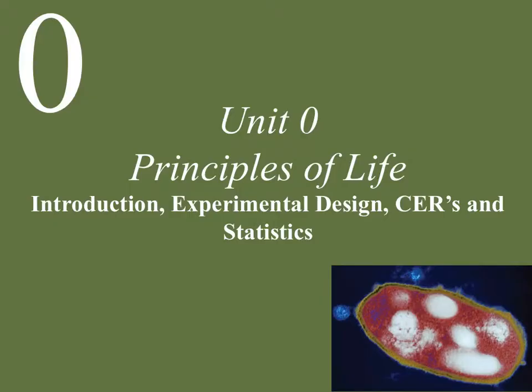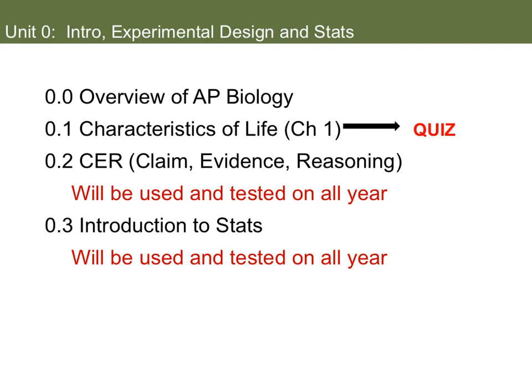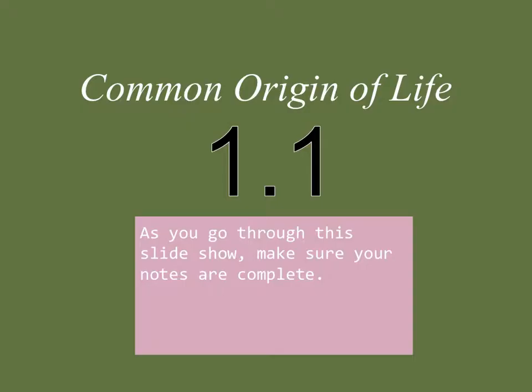We're going to start off with Unit 0: the Principles of Life, Introduction, Experimental Design, CER, and then our statistics. In Unit 0, there are four parts: an overview of AP Bio, Properties of Life — which we will have a quiz on — you need to know what a CER is, which we'll be using and testing on all year long, and then also stats, which we'll be using in our labs and tested on all year long. You should be taking notes into your notebook.